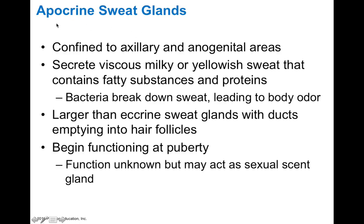Apocrine sweat glands differ from eccrine glands and are confined to the axillary and anogenital areas — the anogenital area being the perineum, essentially the space between the external genitalia and the anus. Apocrine sweat glands secrete a more viscous, milky or yellowish type of sweat that contains fatty substances and proteins. These aren't active until puberty, and their function is not fully known, but they probably act as a sexual scent gland since these viscous substances likely contain pheromones involved in sexual communication.